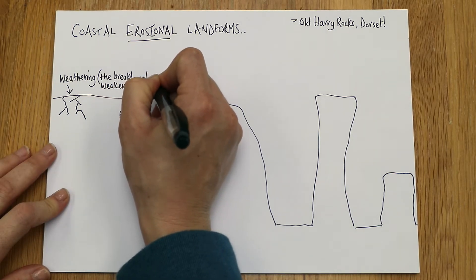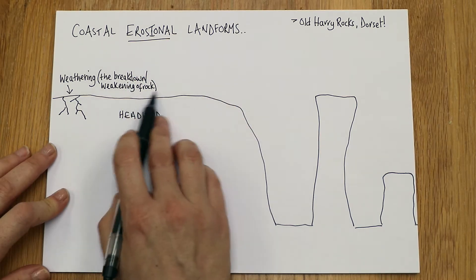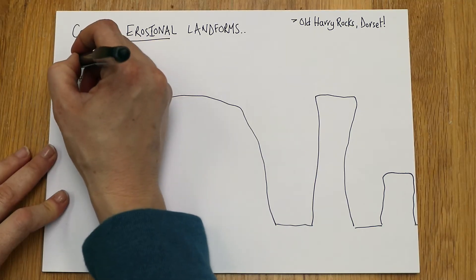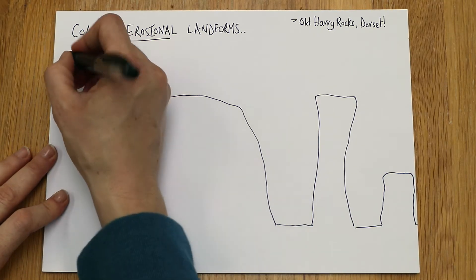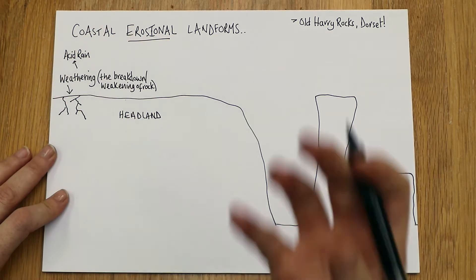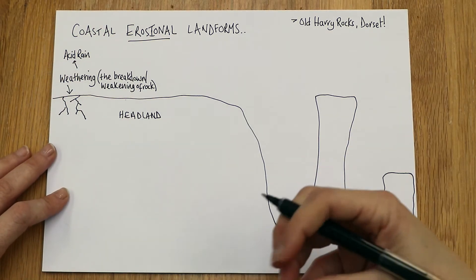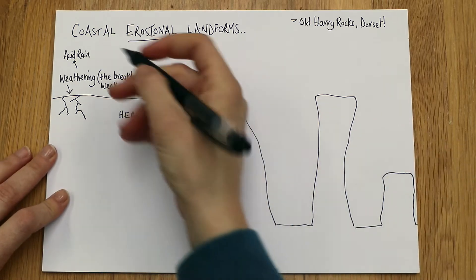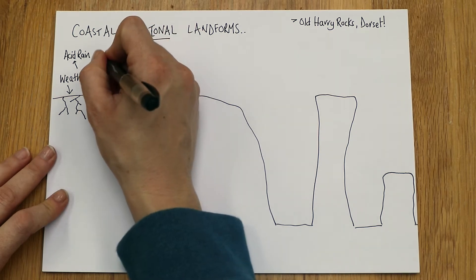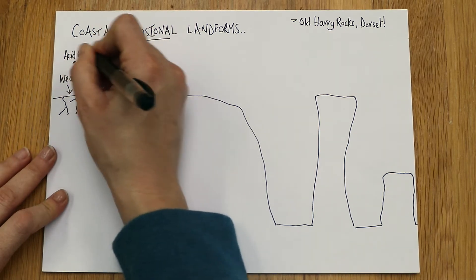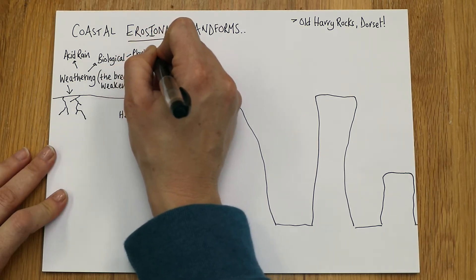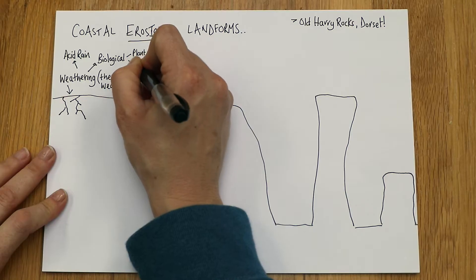Remember there are different types of weathering. The best one is probably acid rain — that's when rain takes in carbon dioxide and becomes slightly acidic. That's chemical weathering. The biological one is plant roots and animal burrows, things like rabbits.